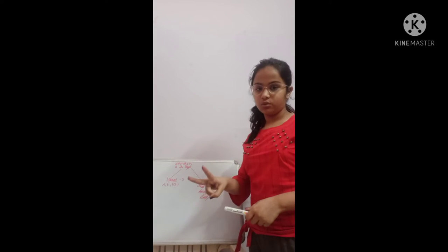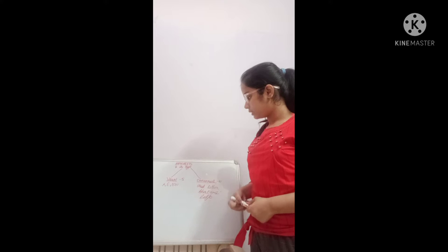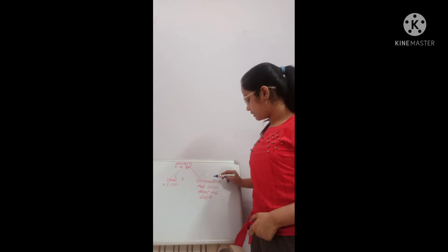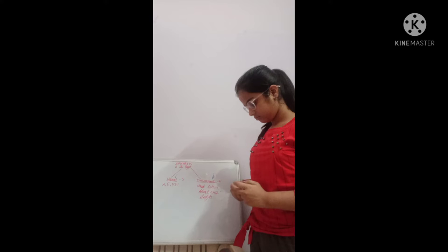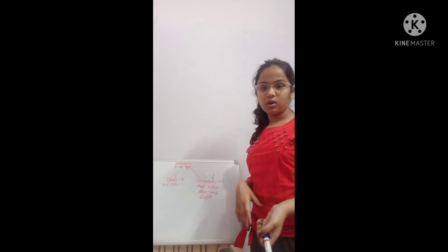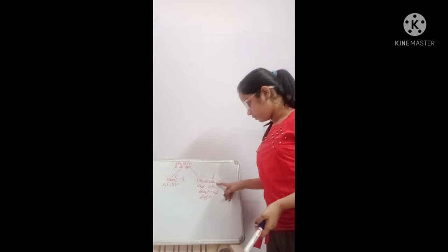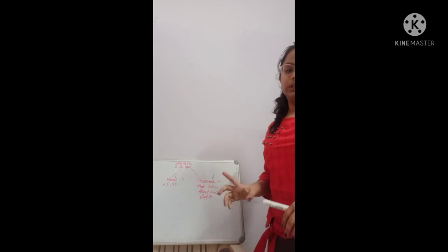Alphabets have two types. One is Vowel and the second is Consonant. Vowels are 5 and consonants are 21.